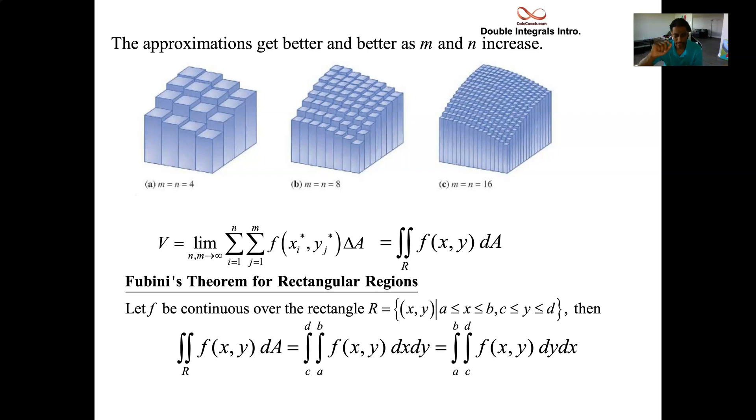So what we have here then is our double integrals, but now we have bounds on them. And so the interior bounds correspond to the first variable that you're going to integrate with respect to, and the exterior bounds correspond to the second variable. So dx dy would be A and B inside and C and D outside. dy dx would be C and D inside and A and B outside. And it turns out they're exactly the same.